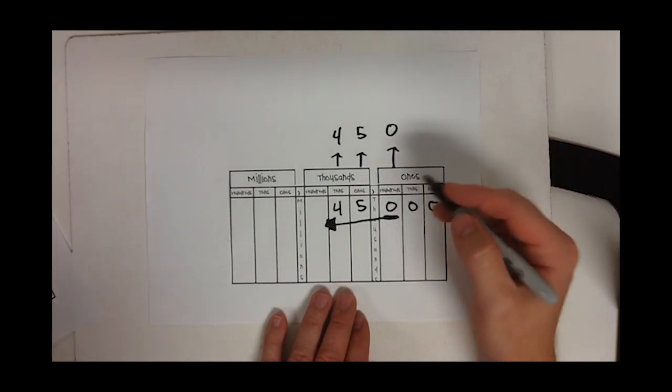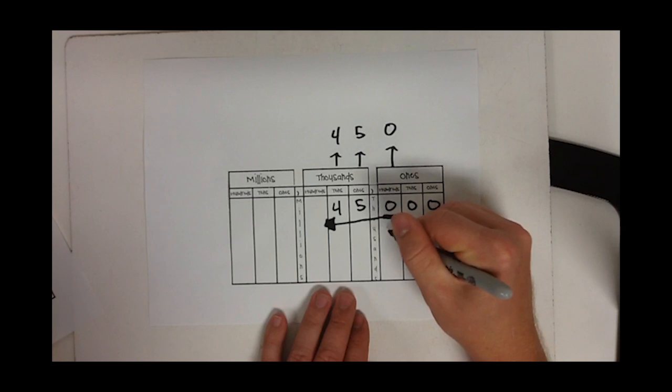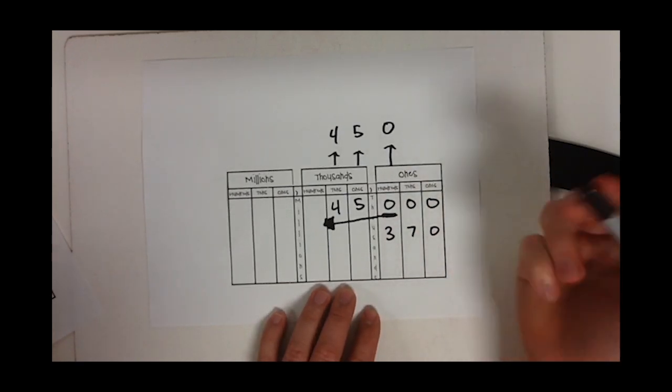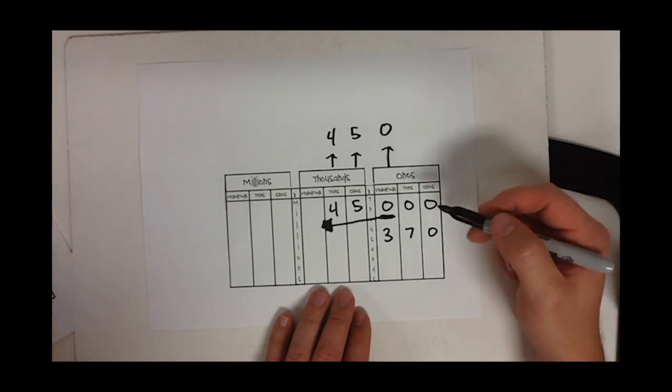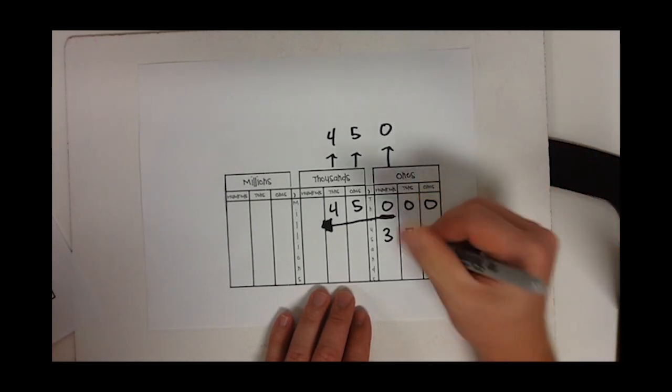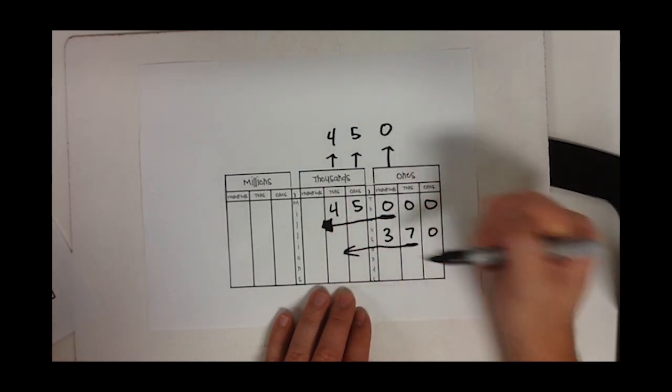That can be a little confusing, so I'm going to give you one other example. Let's do a simple number: 370. They're going to ask you how many tens are in 370. How many tens? Well, I go to the tens, underline the tens, draw my arrow to the left. The only numbers I have over there...